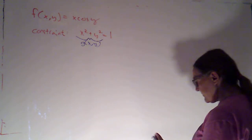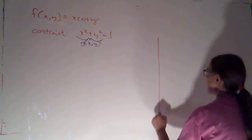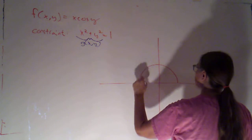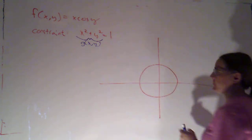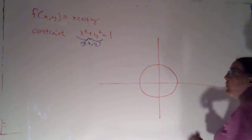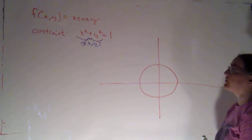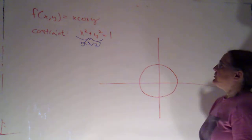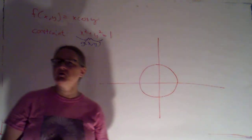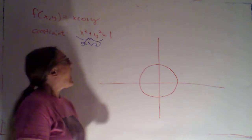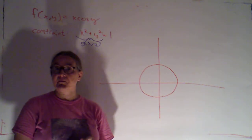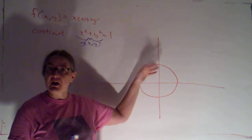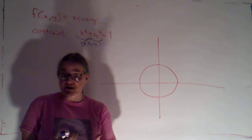What I'm going to do is start by drawing a picture of my constraint curve — one level curve for the function G. That's the unit circle. I'm only concerned with points that are on the unit circle and applying F to that. I'm going to start drawing some level curves for F, and I'm going to be interested in the level curves for F that actually intersect this circle, because that will give me some information about points on the circle.